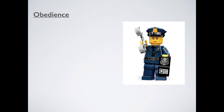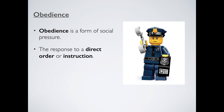First thing we have to do is define obedience. Obedience goes kind of hand in hand with conformity — both are forms of social pressure. But whereas conformity is a little bit more subtle, about observing and doing what the group are doing, often unspoken, obedience is the response to a direct order or instruction. It normally comes from an authority figure — a person or a group of people. For example, if a policeman shows you his badge and tells you to do something, you're probably going to do it. A judge would be an authority figure; we might even say a celebrity is an authority figure. That is obedience.